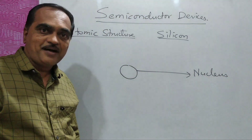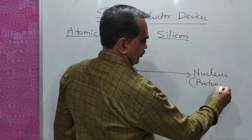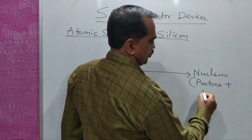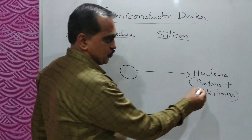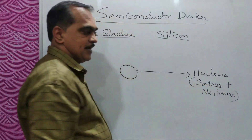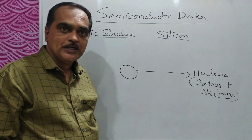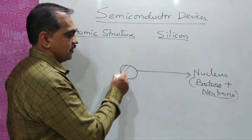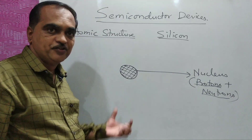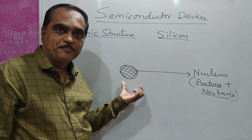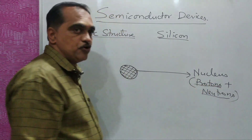The nucleus contains protons and neutrons. Protons are positively charged particles and neutrons are electrically neutral. As a whole, the nucleus is a positively charged center or core, because it contains protons which are positively charged particles.